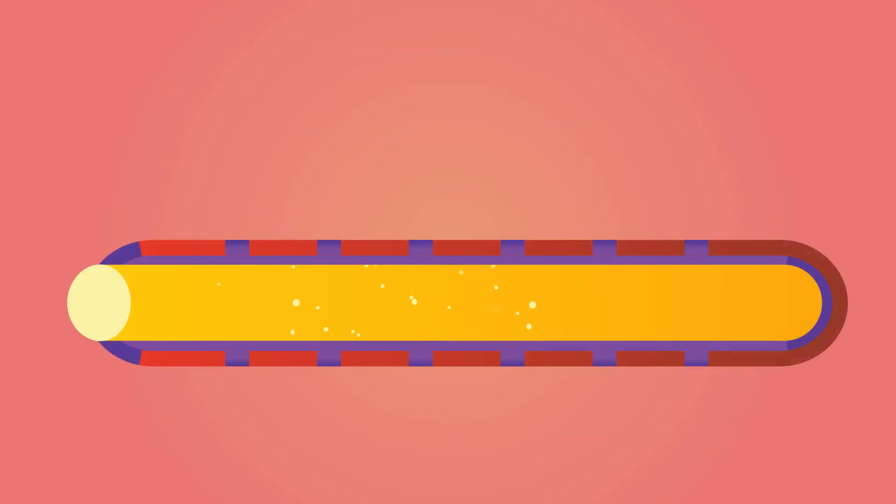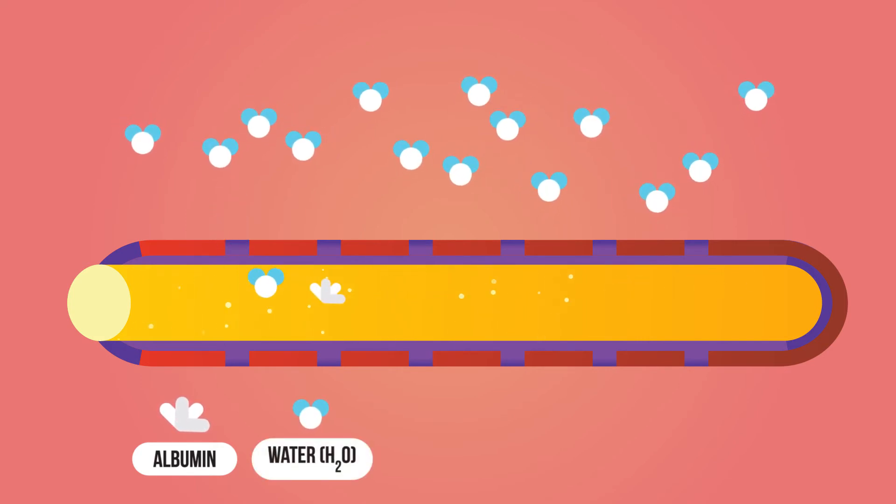The most important protein in plasma is albumin. Albumin proteins in the blood plasma pull water back into the blood capillary from the surrounding tissues.